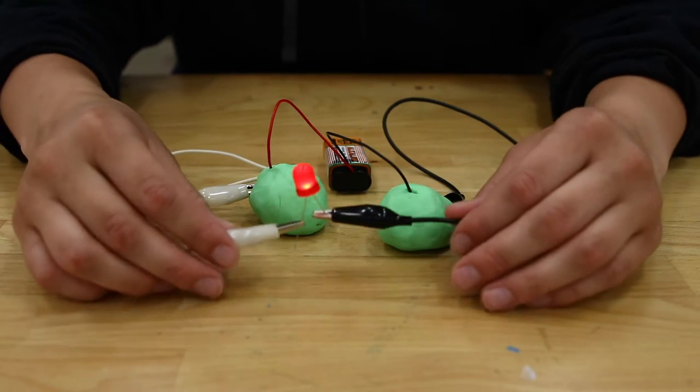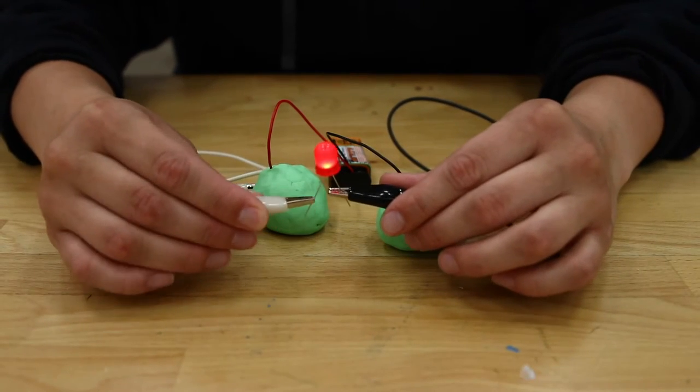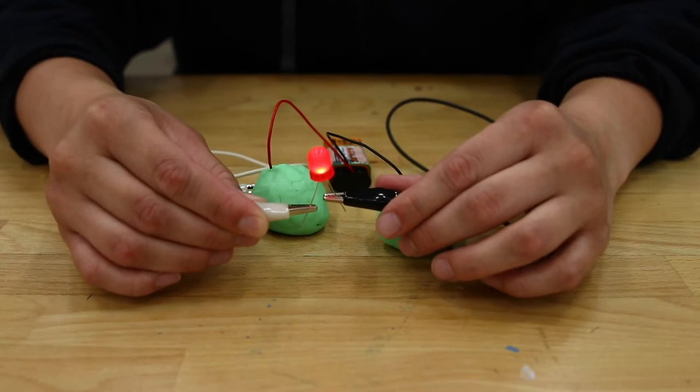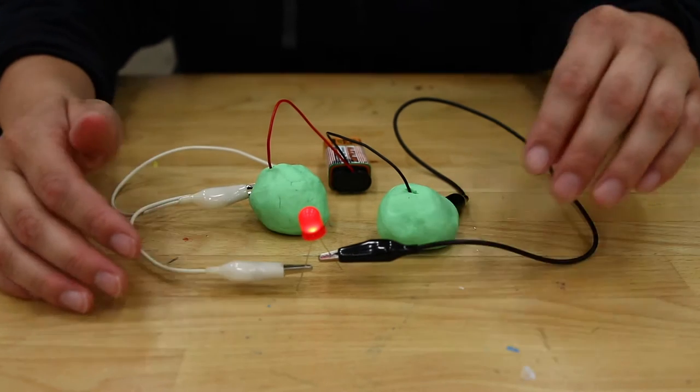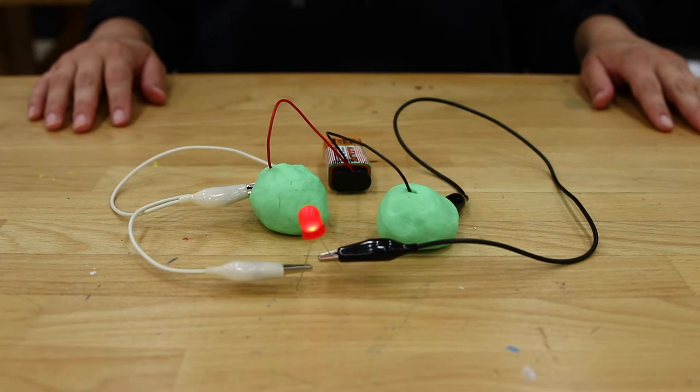We're going to use the same circuit setup we used in our first activity where we tested conductivity of different materials. Complete this activity to the point where the LED turns on. If you've added other materials to your circuit, remove them and make sure the alligator clips are connected to the Play-Doh.